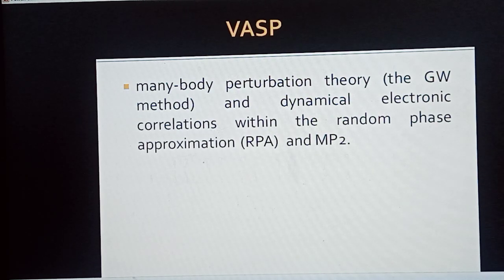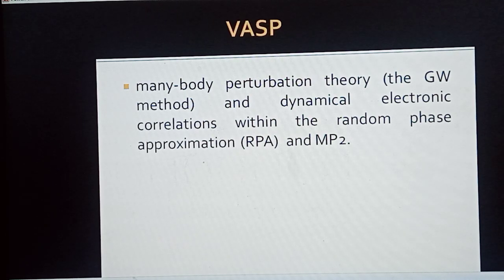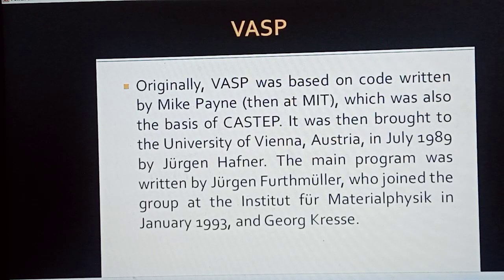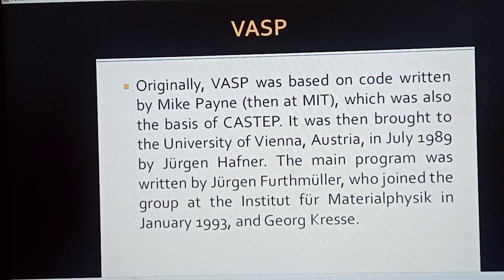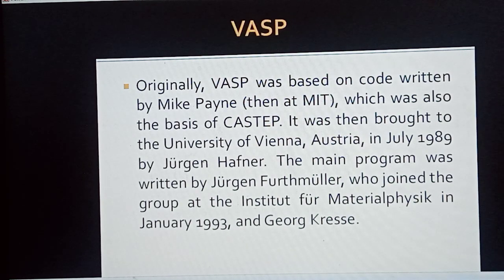Originally, VASP was based on code written by Mike Payne at MIT, which also formed the basis of CASTEP. It was brought to the University of Vienna, Austria in July 1989 by Jürgen Hafner. The main program was then written by Georg Kresse, who joined the group at the Institute for Material Physics in January 1993, along with George Kresse.